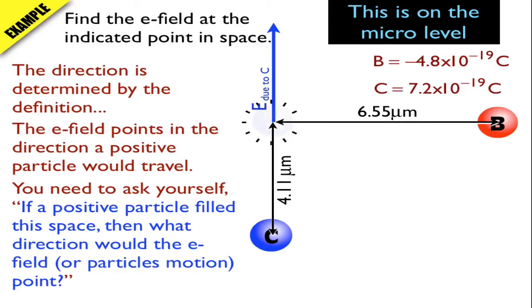And I'll do the same thing for B. So I'll do this kind of thought experiment. Think, okay, if there's a positive particle there, what would it do due to B? Well, they're opposite charges, so B would attract that particle. So now I have the two pieces of electric field.